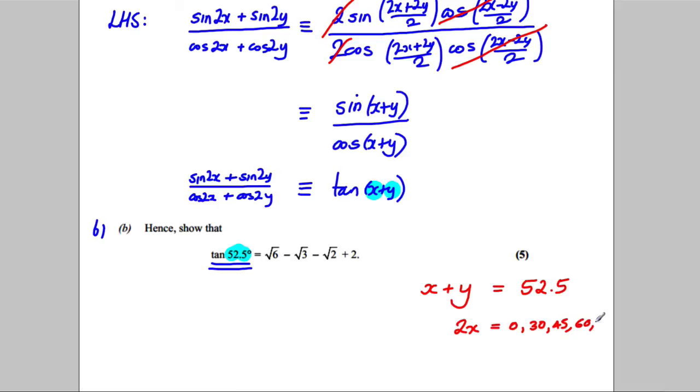And similarly, that 2Y has to be one of these things as well because they're the exact values of sine and cosine that I know. So 2Y would have to be one of these two things as well.